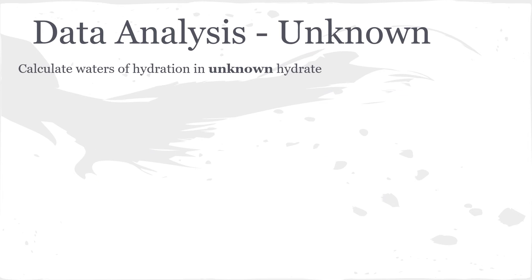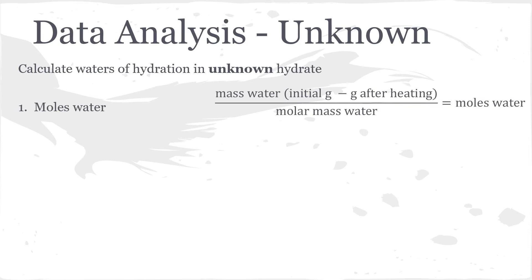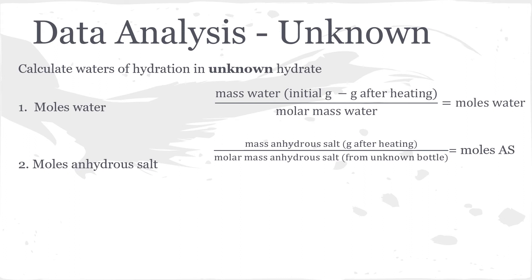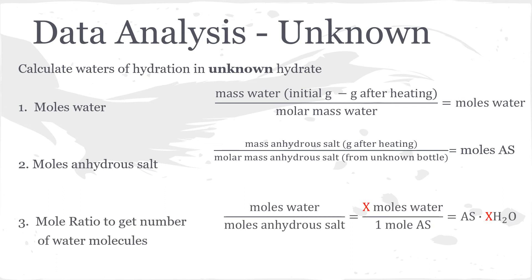For the unknown, we want to figure out how many water molecules are in our unknown hydrate. First, find how many moles of water are in your hydrate by taking the mass of water and dividing by the molar mass of water. Next, find the moles of the anhydrous salt in the same exact way — divide the mass by the molar mass. Then find the mole ratio: divide the moles of water by the moles of the salt, and whatever that number is, that is your x, or the number of water molecules in your hydrate.